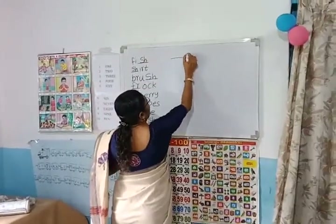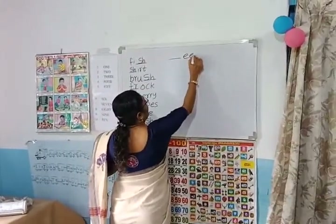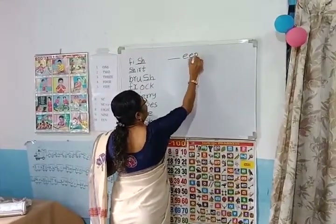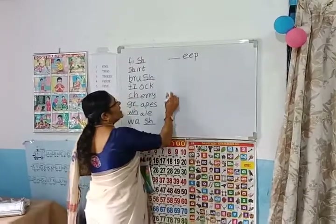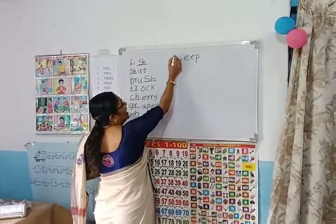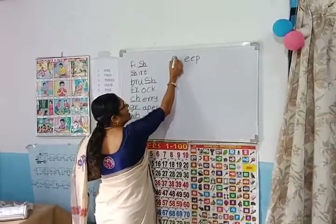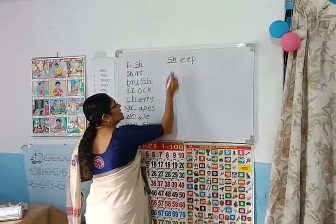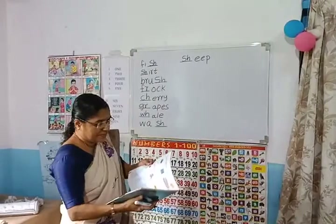Dash, E, E, P — which letter comes here? Sh — S, H. S, H, E, E, P — sheep.